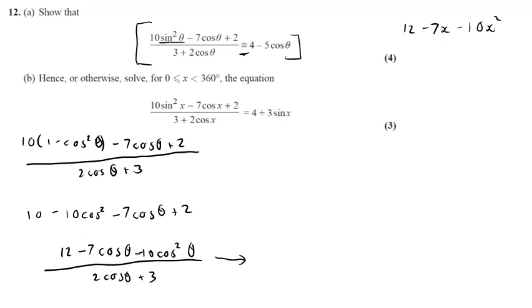We can also bear in mind that the denominator can currently be written as 2x plus 3. So that means I know pretty much that 2x plus 3 or 2 cos theta plus 3 will be one of my terms on my numerator.